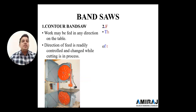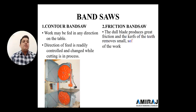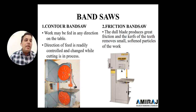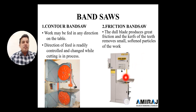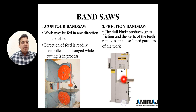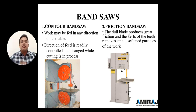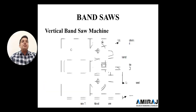The second type is the friction band saw. The burr blades produce great friction at the nip of the teeth, removing small particles of the workpiece. Friction is generated at the nip and we provide feed from one side only, unlike the contour band saw where feed can come from all sides. The cut is based on friction — proper cutting occurs through the friction band saw mechanism.